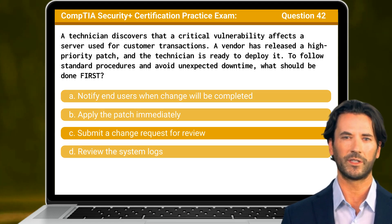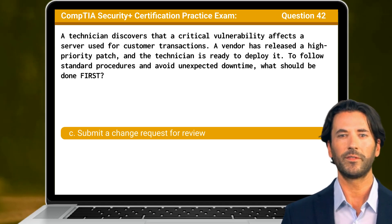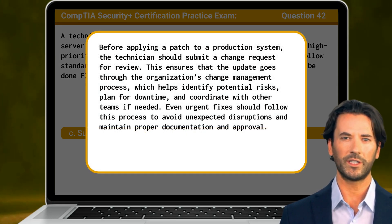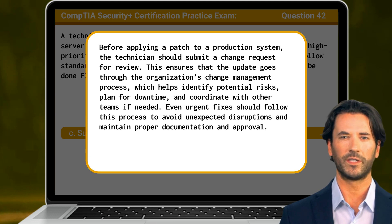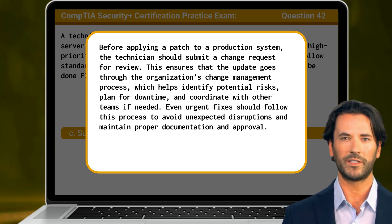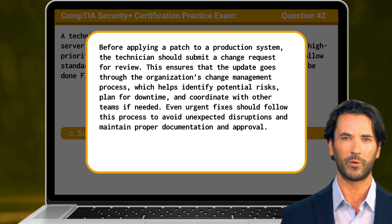The answer is C. Submit a change request for review. Before applying a patch to a production system, the technician should submit a change request for review. This ensures that the update goes through the organization's change management process, which helps identify potential risks, plan for downtime, and coordinate with other teams if needed. Even urgent fixes should follow this process to avoid unexpected disruptions and maintain proper documentation and approval.